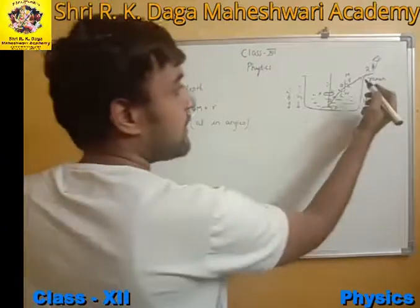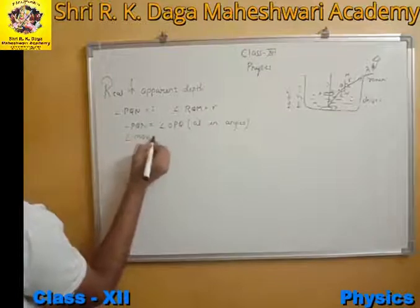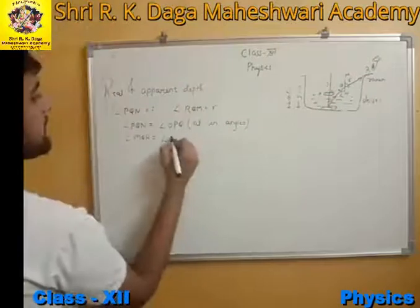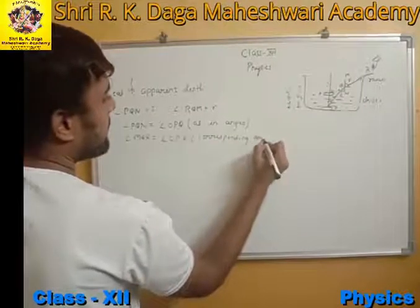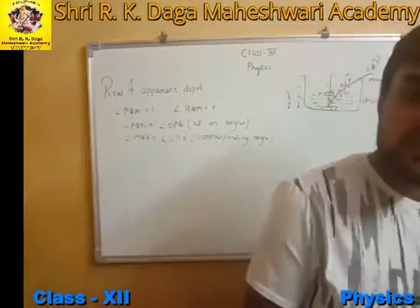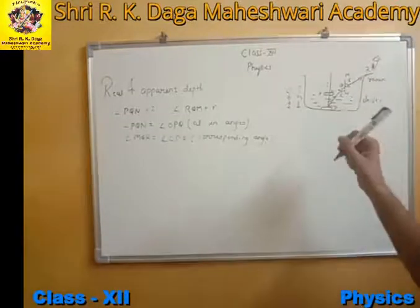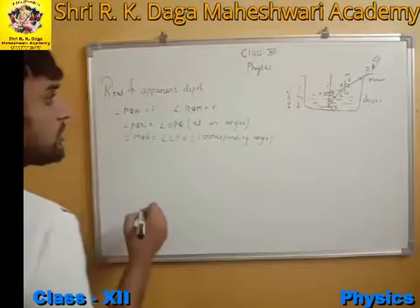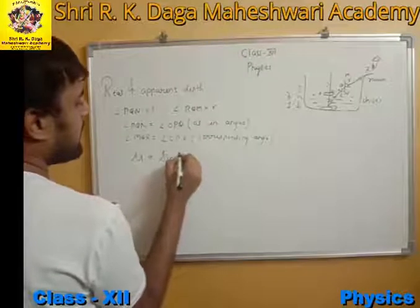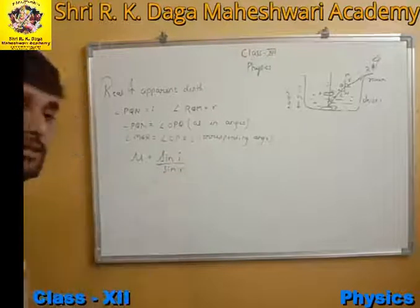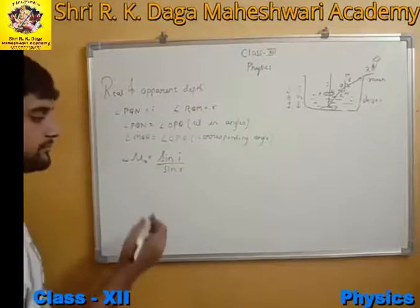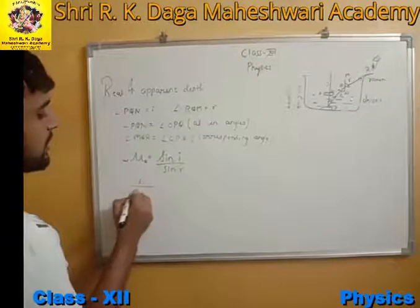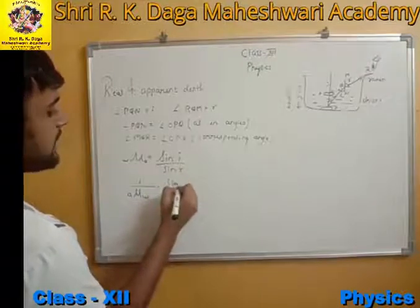Similarly, angle MQR equals the corresponding angle. This is simple geometry from your previous mathematics classes. We know by Snell's law that nu equals sin i divided by sin r. Since the ray is propagating from water to air, the refractive index will be the relative refractive index of air with respect to water.